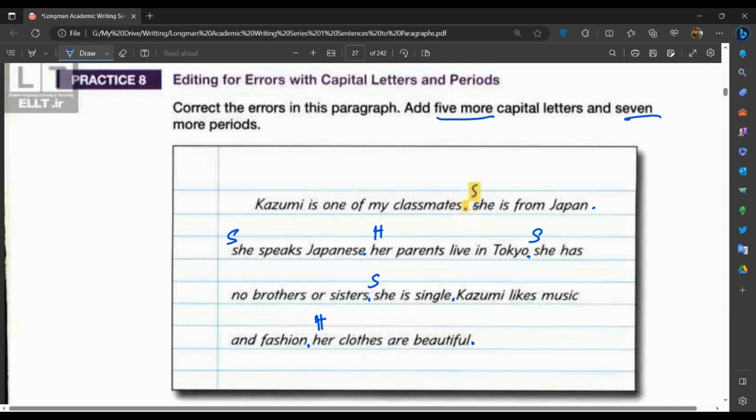She has no brothers or sisters. She is single. Kosumi likes music and fashion. Her clothes are beautiful. Let's see how many punctuations did we put. Seven periods: one, two, three, four, five, six, seven. Yes, correct.